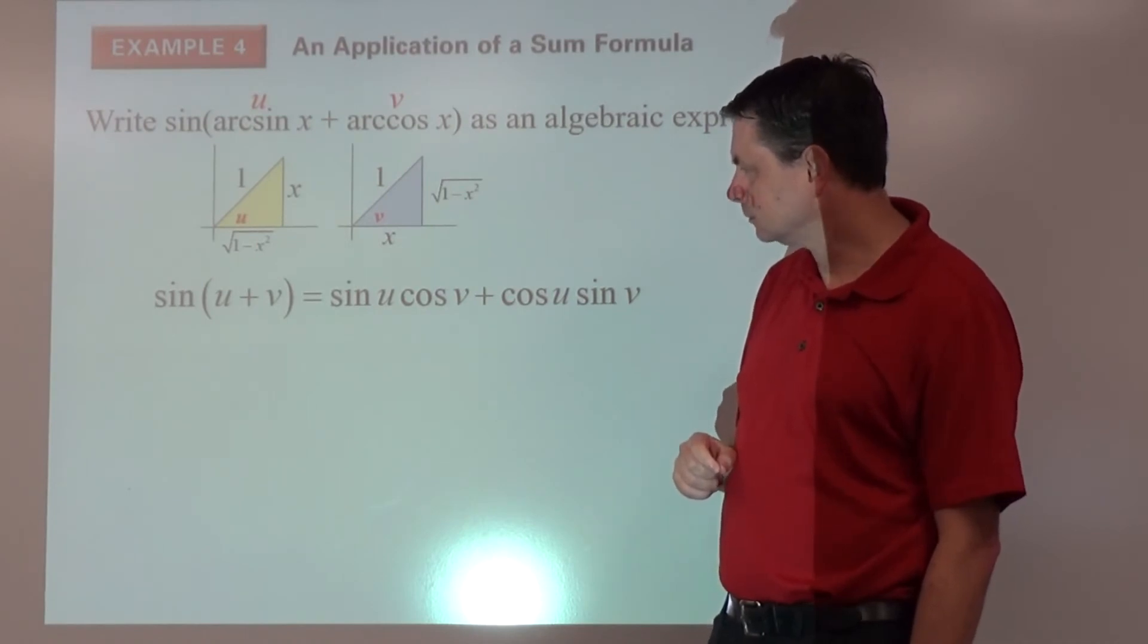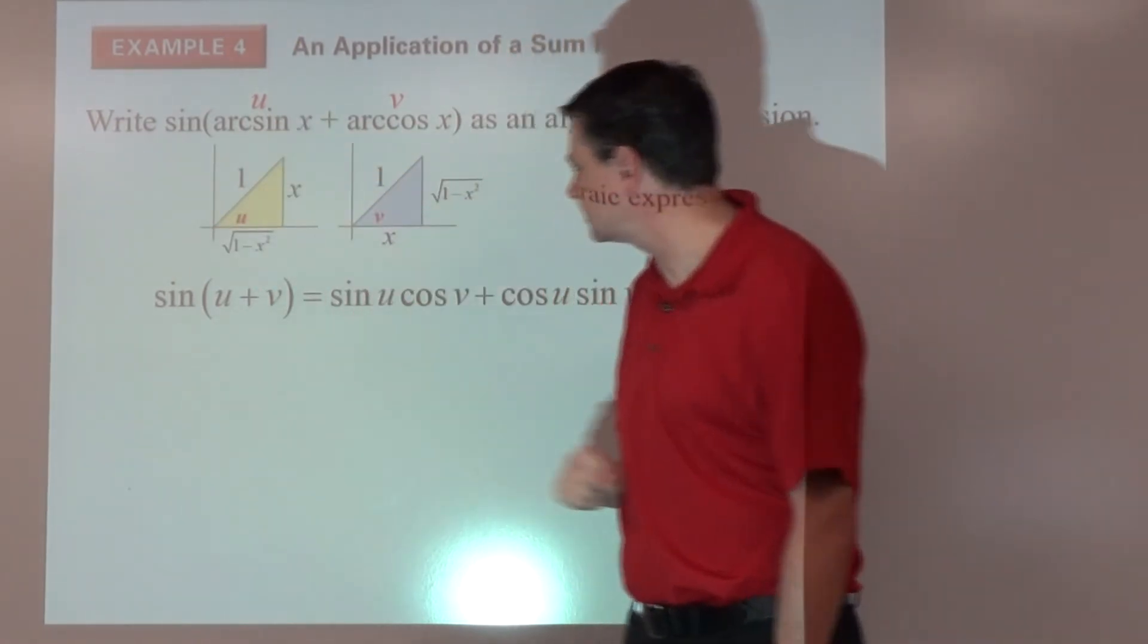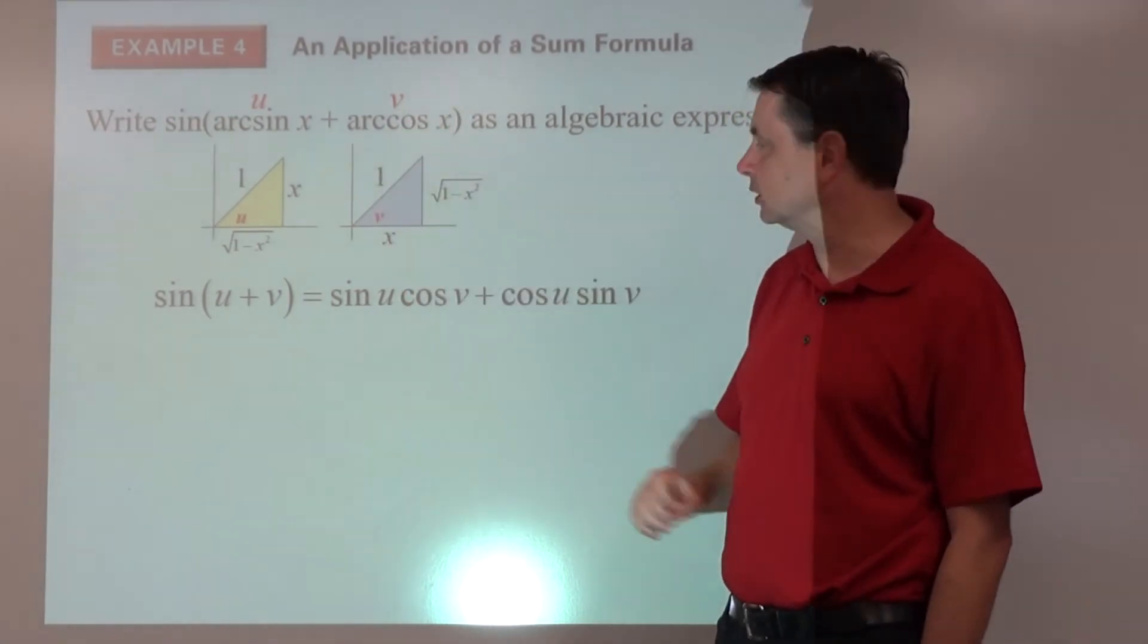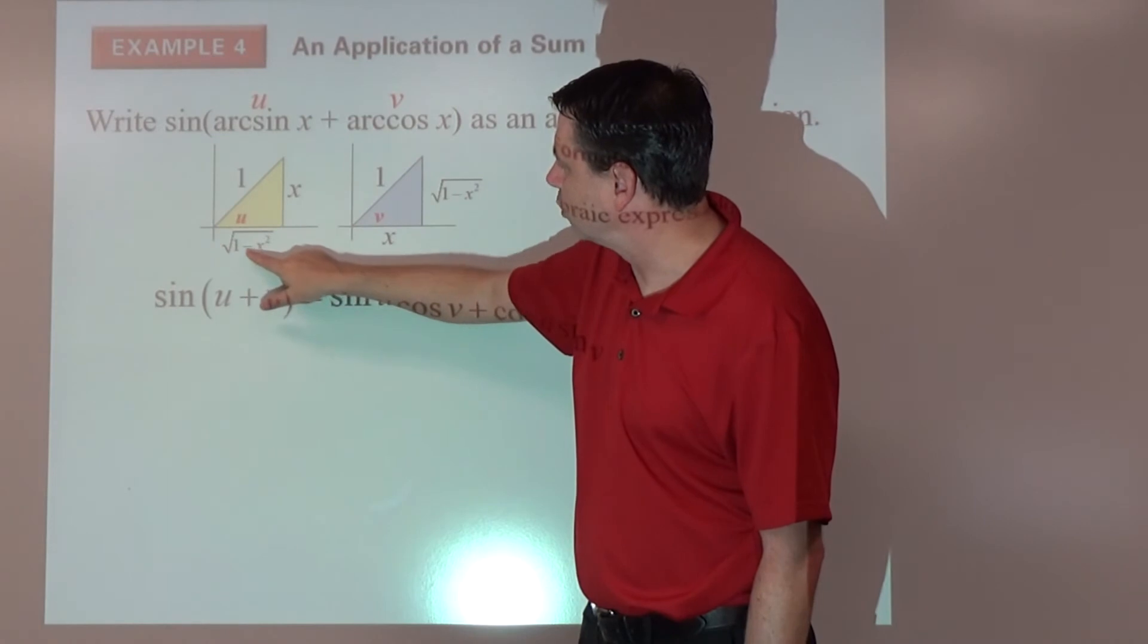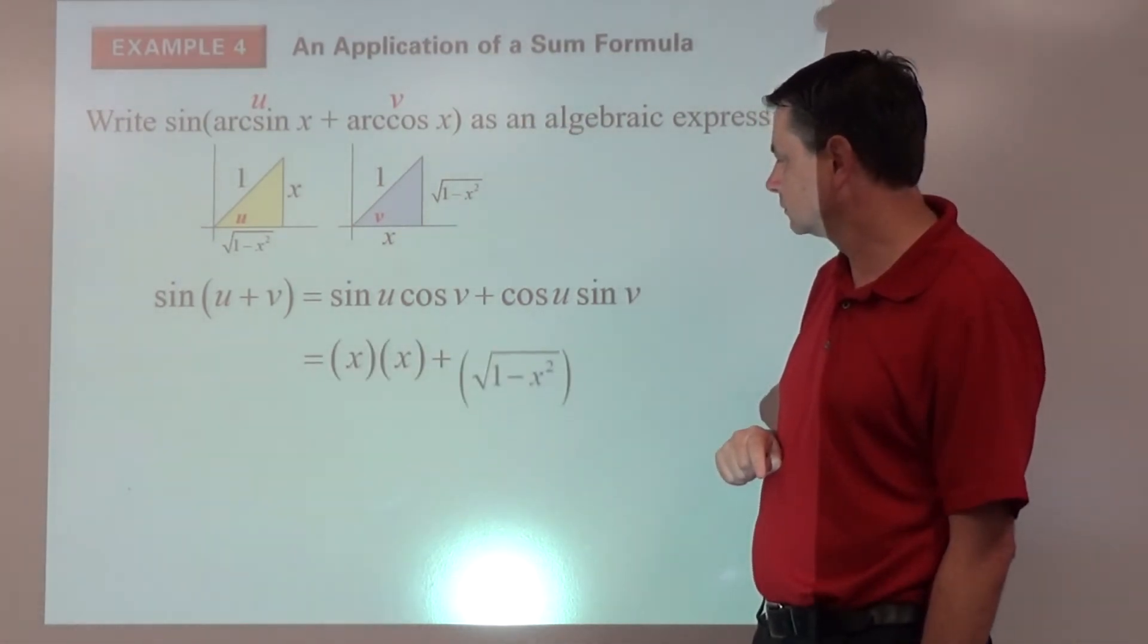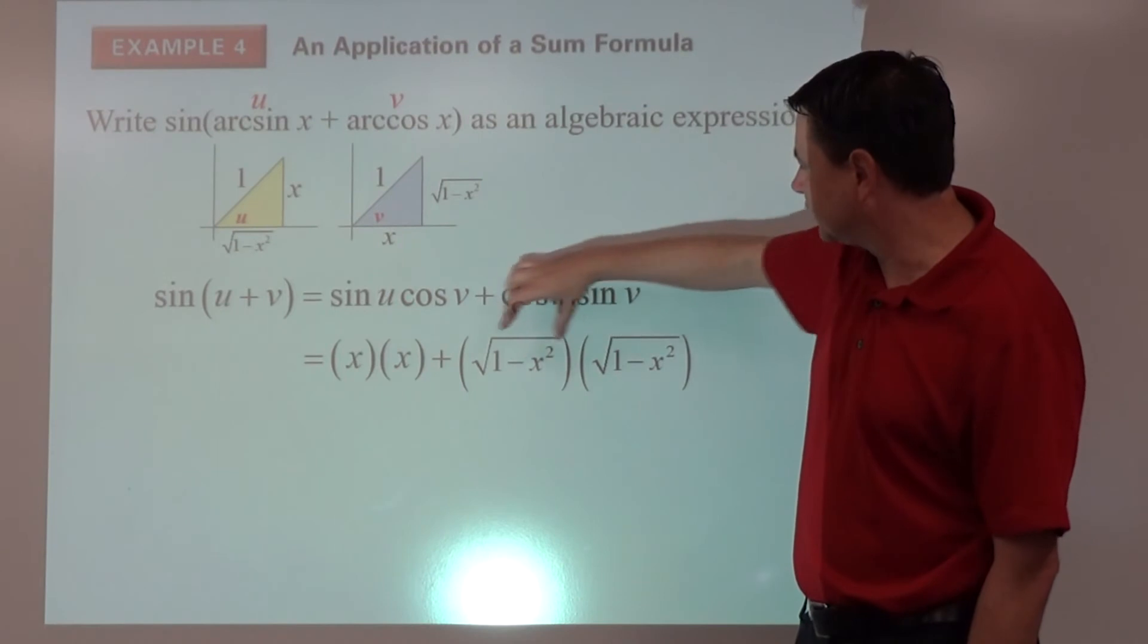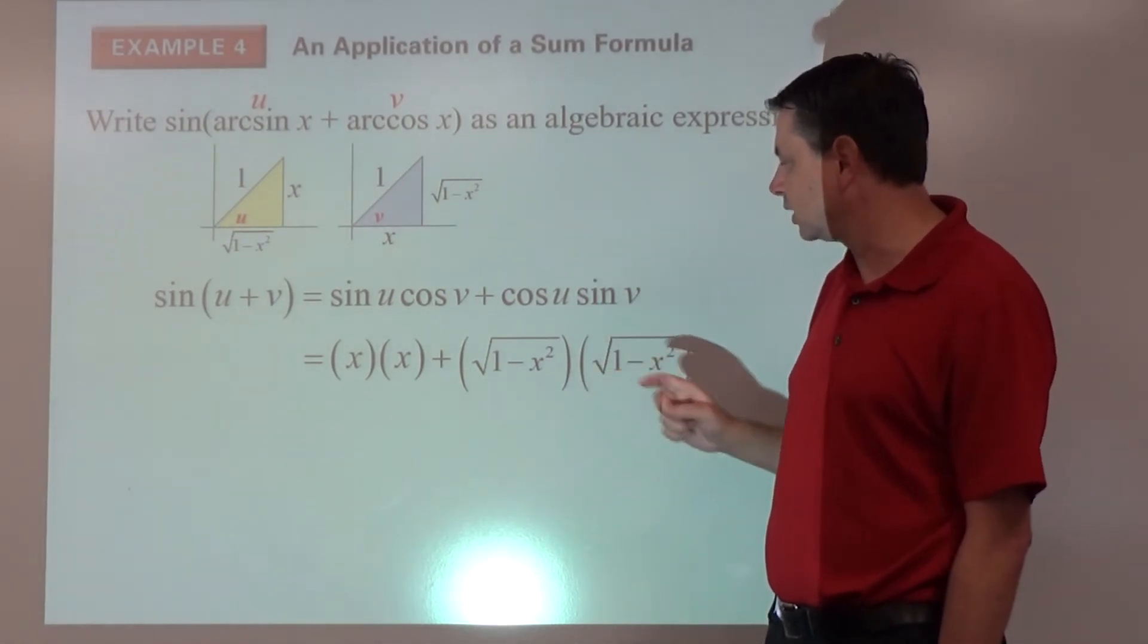Alright, so let's look at the formula then. Sine of u, we already knew that one, so sine would be opposite over hypotenuse, that's x. Cosine of v, adjacent divided by hypotenuse, that's also x. So x times x plus cosine of u is the square root of 1 minus x squared over 1. And the sine of v is the same thing. So clearly we've got x squared. If we multiply two identical roots, we're going to get what's underneath the radicand, 1 minus x squared. We've got x squared plus 1 minus x squared. So the answer is 1.